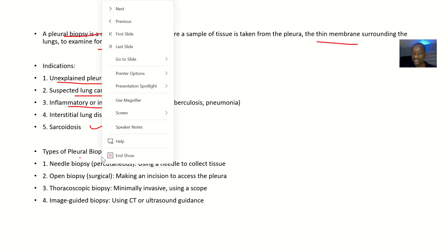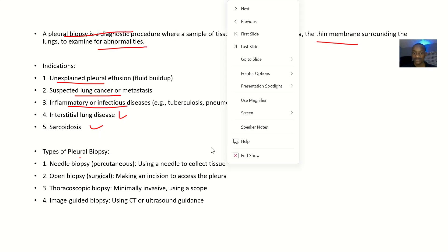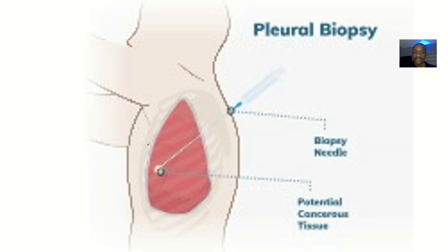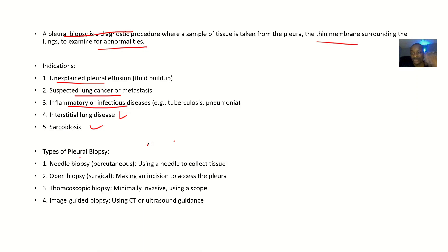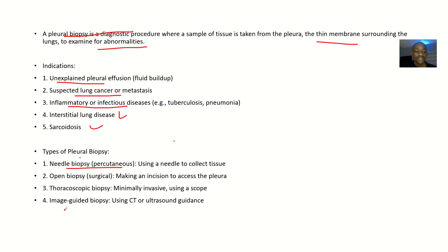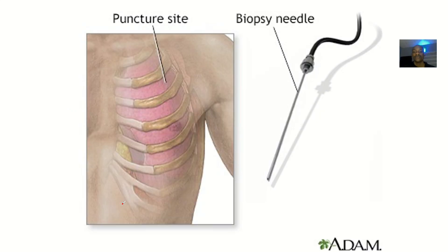Types of biopsy: the most popular one is needle biopsy, also known as percutaneous biopsy — you use a needle just to collect the tissues. Then there's open biopsy, which is surgical, making an incision to access the pleural. Thoracoscopic biopsy uses a thoracoscope. Image-guided biopsy uses a CT scan to guide you to the biopsy site.